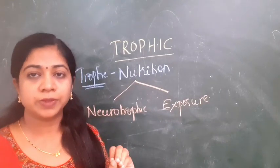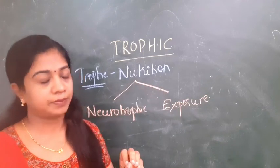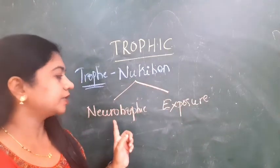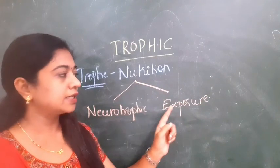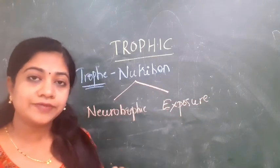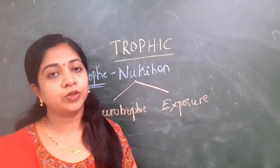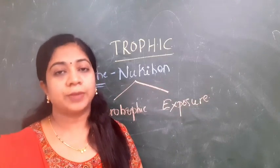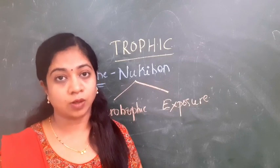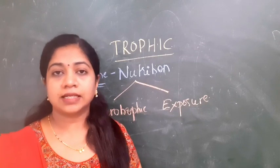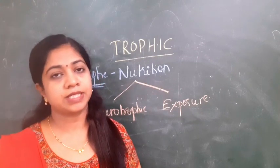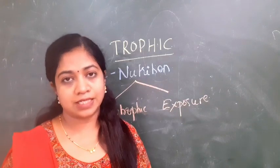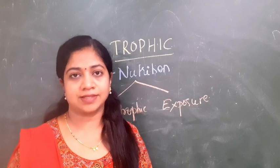In the trophic ulcer, the nourishment of the corneal epithelium is hampered, hence it is called trophic corneal ulcer. We have neurotrophic corneal ulcer as well as exposure keratopathy. In this video we will discuss neurotrophic keratopathy under the headings of pathogenesis, causes, clinical features — signs and symptoms — as well as management.